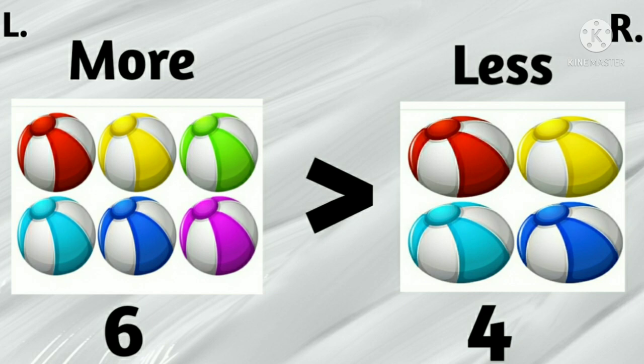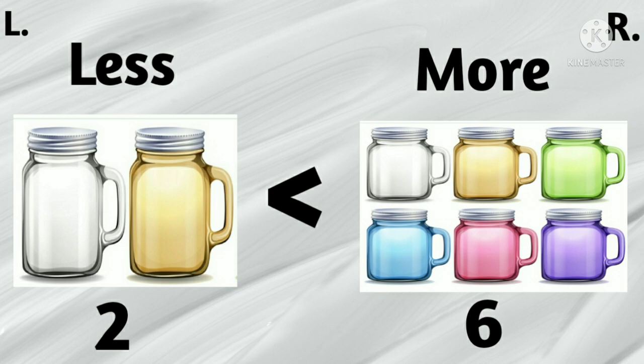Here in this one, there are 2 jars on the left side and 6 jars on the right side. So we can say the left side has less number of jars and the right side has more number of jars.